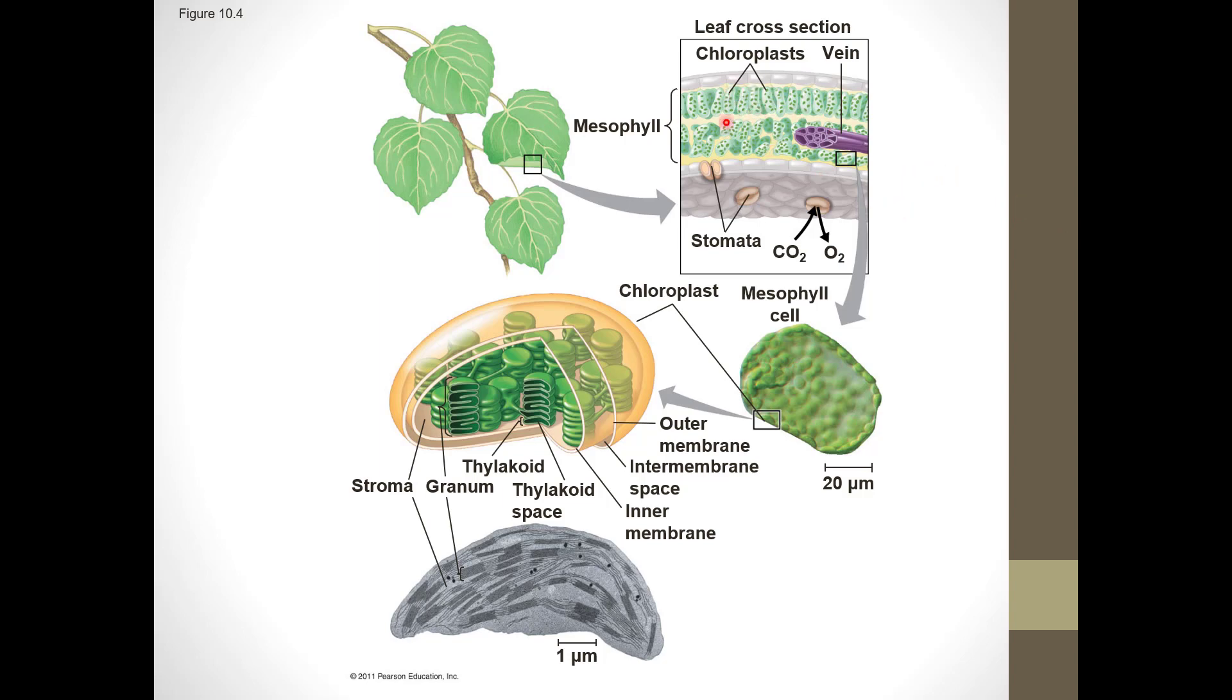Now if we zoom in on this mesophyll, which means the middle of the leaf, see these green dots in these cells? Here's one of these cells enlarged, and we can see those green dots again. Those dots are organelles called chloroplasts.